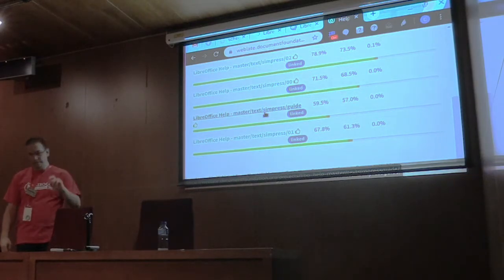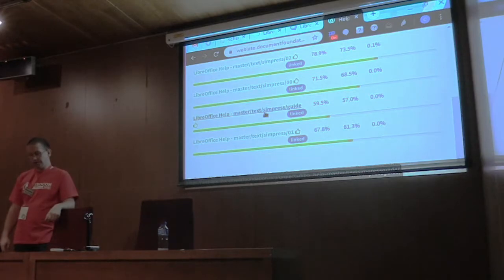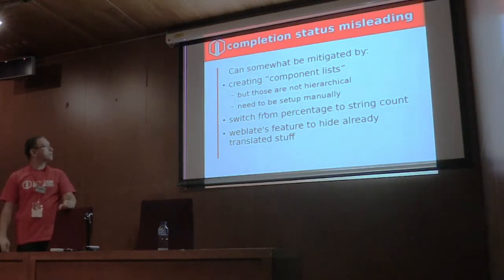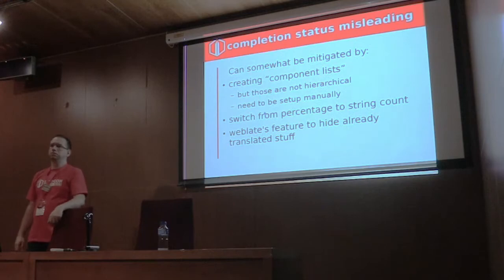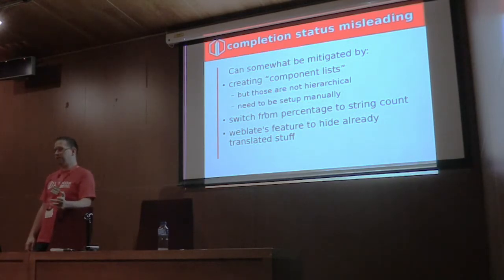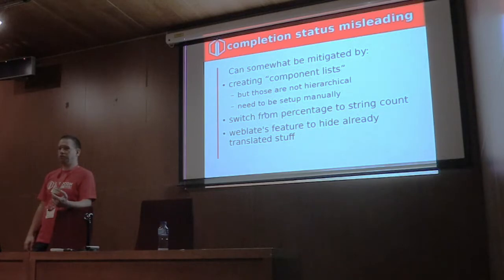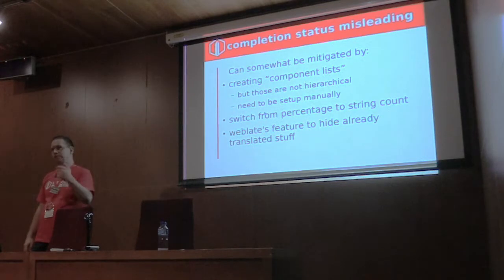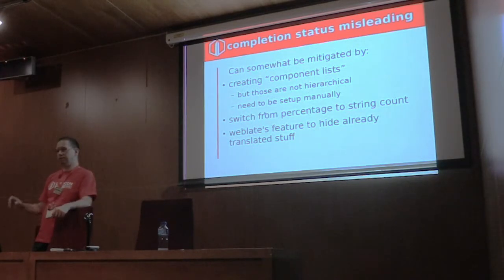At least this is a little help. Another easy fix to make it more apparent what needs to be done is changing from the percentage display to the string count, so you can sort by the number of strings remaining rather than having a percentage.